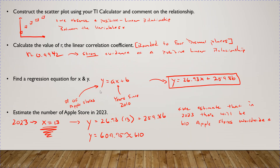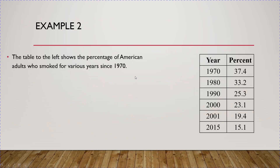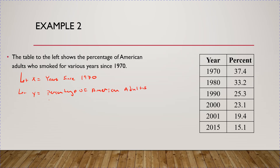Let's do another example. The table shows the percentage of American adults who smoked for various years since 1970. In 1970, 37.4% of adults smoked, and you can see it's decreasing as years went up. By 2015 it was down to 15.1%. Since I started in 1970, I'll let X equal years since 1970, and Y equal the percentage of American adults who smoked at X years since 1970.